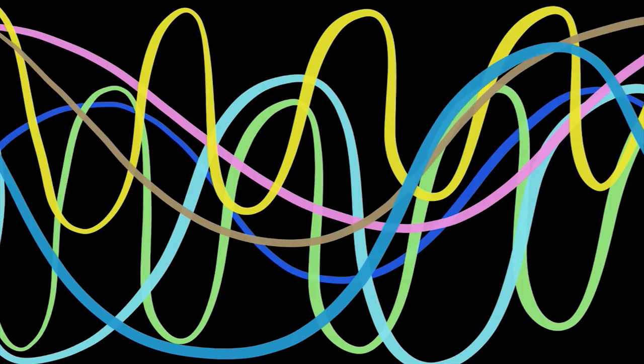How do we image things that are so small? One way is to use waves. How waves scatter from objects tells us about the object's shape and size.